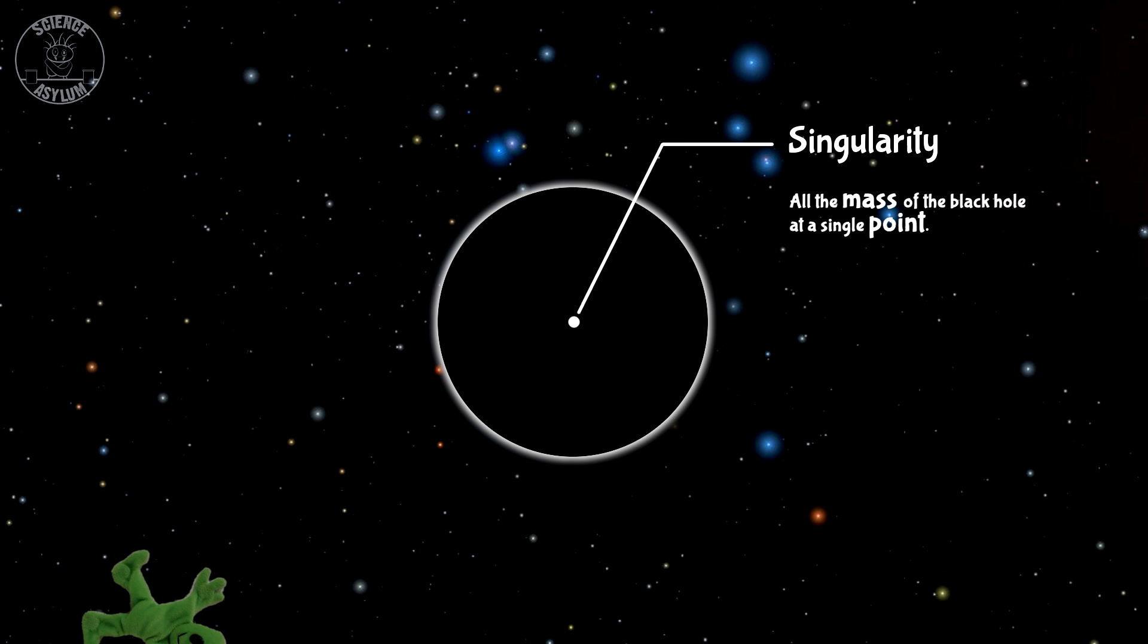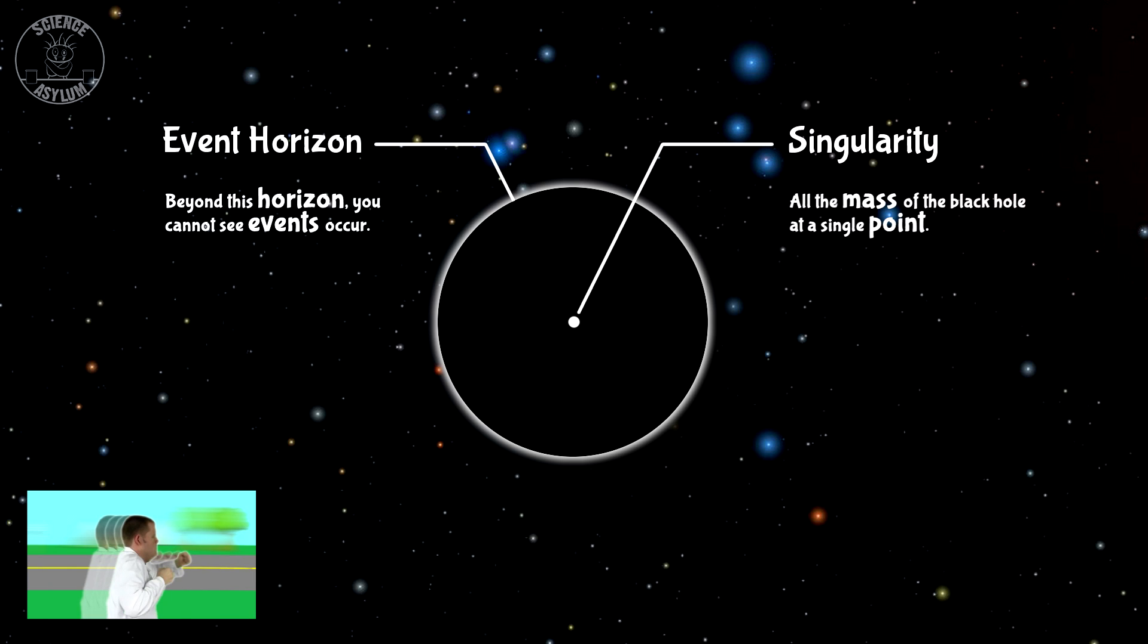When physicists talk about the size of a black hole, they're actually talking about the event horizon. Past that boundary, not even light can escape. And that's the universal speed limit, so nothing gets out.